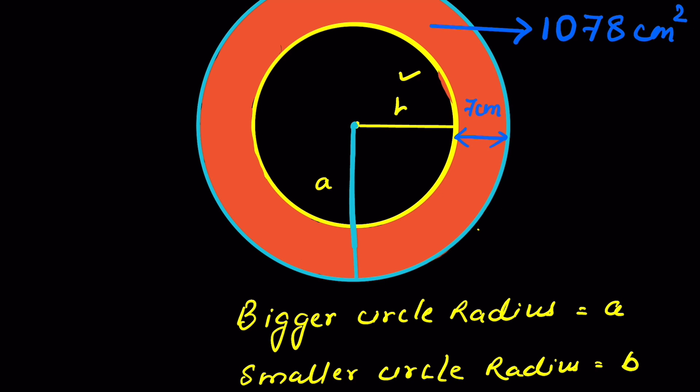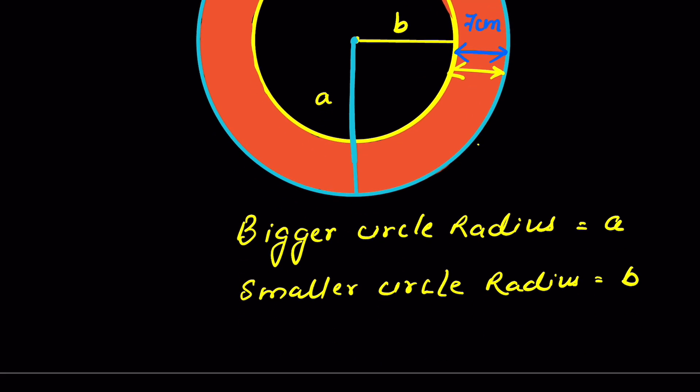Now it says the difference between their radii, that is this distance, is 7 cm. That means a minus b is equal to 7 cm. Let this be equation 1.